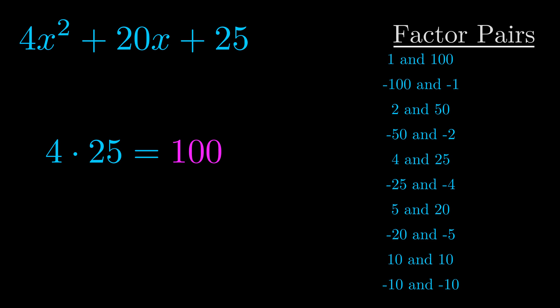The b value is the coefficient on the x term. That's the middle term, the one that we haven't done anything with yet. And really this is the only factor pair that we need.